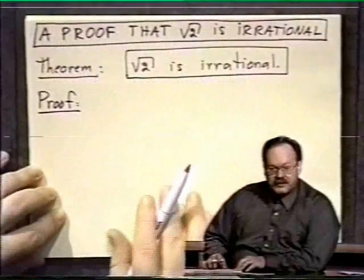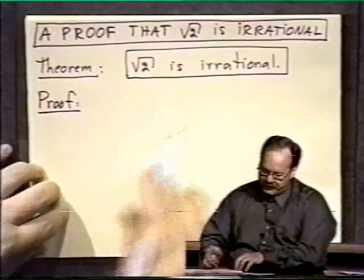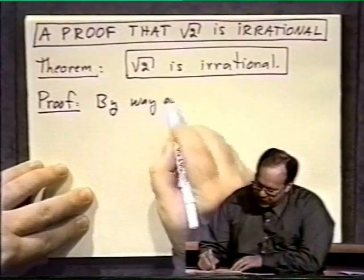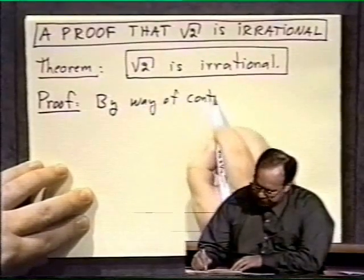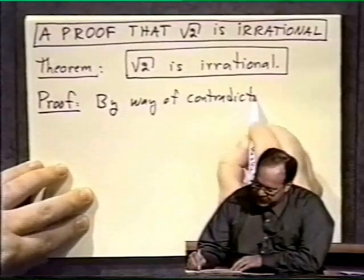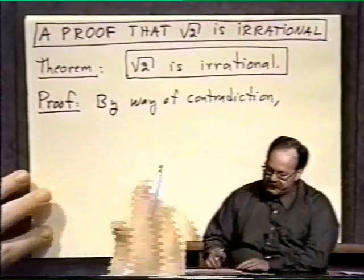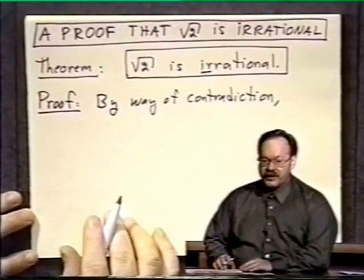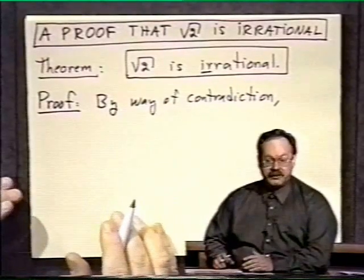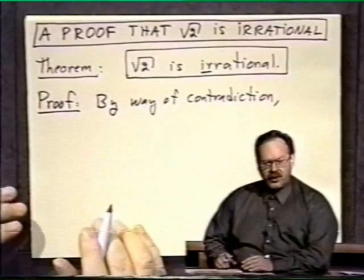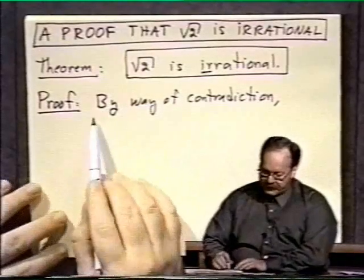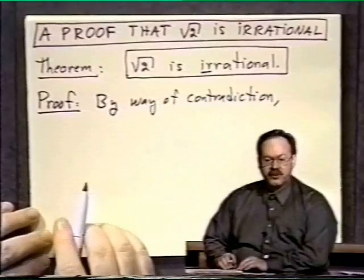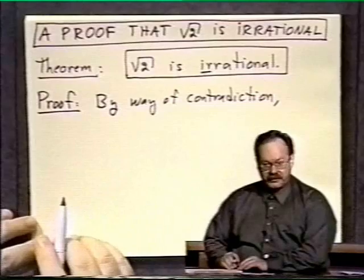There is a theorem: square root of two is irrational. Here's how the proof is going to go. We're going to do this proof by way of contradiction. This is usually the way one proves that something is irrational, because rational is a proper definition, but irrational is simply all the real numbers that are not rational. The traditional way is to do it by contradiction. We will assume that square root of two is rational and then we'll try and get a contradiction from that.